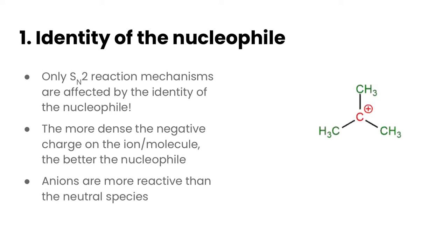Starting off with the identity of the nucleophile, it's really important to keep in mind that only SN2 reaction mechanisms are affected by the identity of the nucleophile, because in SN1 the nucleophile only attacks after the rate determining step. So it doesn't matter how much nucleophile you have present or what it actually is, it does not affect the rate of the reaction. This is only for SN2 reaction mechanisms. Basically the idea here is that the more dense the negative charges on the ion or molecule, the better it will be as a nucleophile.